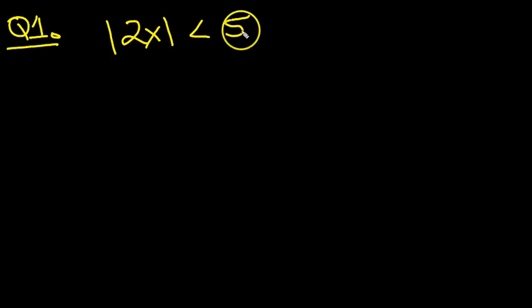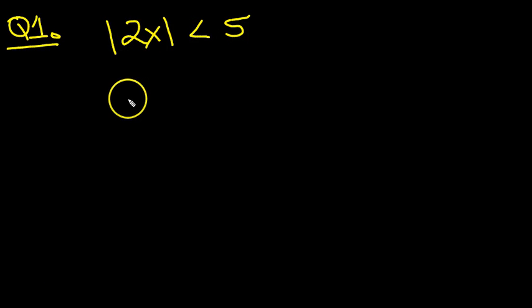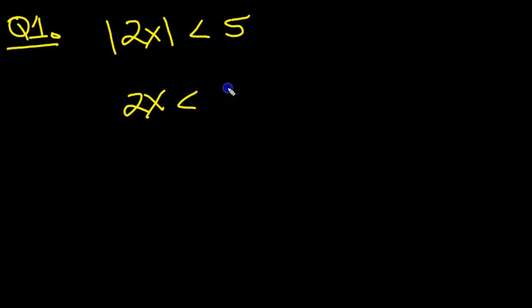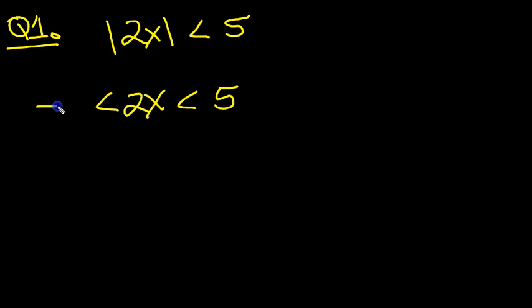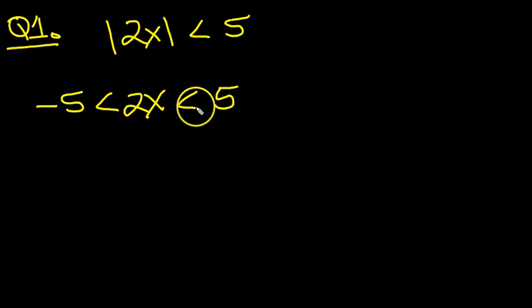The modulus of 2x is less than 5. When does this happen? This happens when 2x is less than 5 or greater than minus 5. That's when this happens.